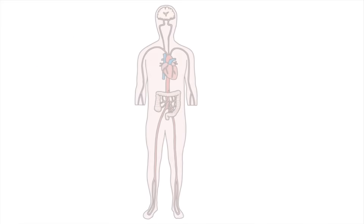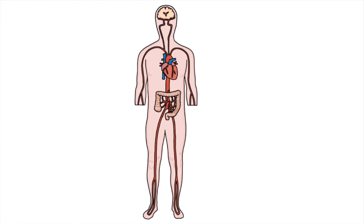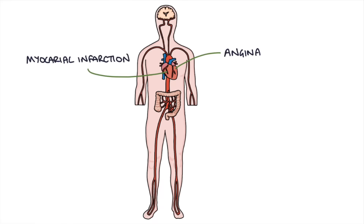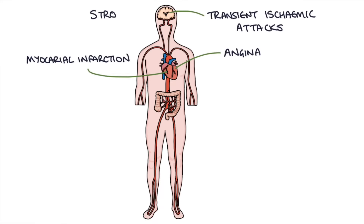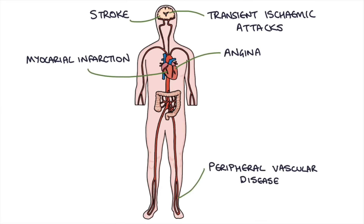What are the end results of atherosclerosis? This is really when somebody has established cardiovascular disease. These include angina, myocardial infarction, transient ischemic attacks, strokes, peripheral vascular disease, and chronic mesenteric ischemia — when there's not enough blood flow to the bowel.